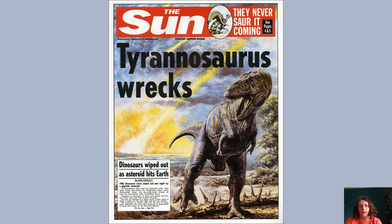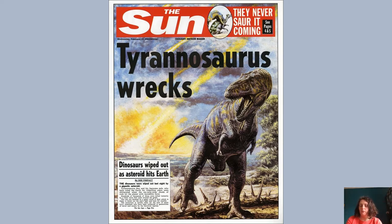Here we have an example of a newspaper. This obviously isn't a real newspaper — there weren't newspapers in the time of the dinosaurs. But the Sun newspaper created some front pages of what it might have looked like if it had existed when dinosaurs were around. And you'll notice in your home learning pack they've also done one showing how they might have reported about the Great Fire of London.